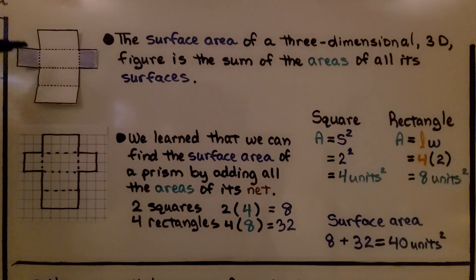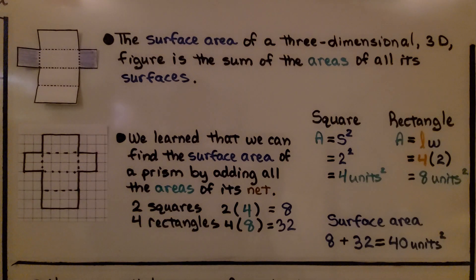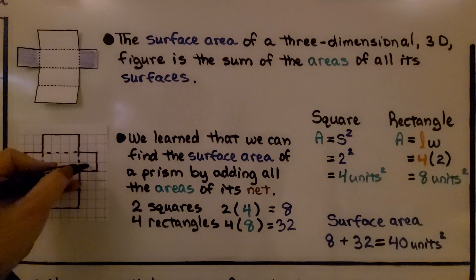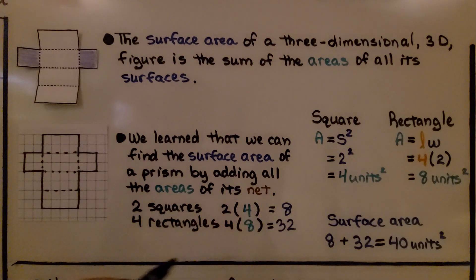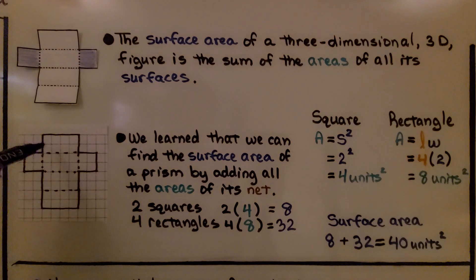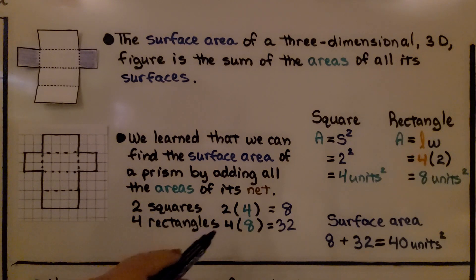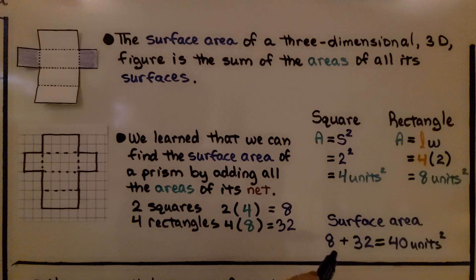Here we have a net of a right rectangular prism. The surface area of a 3D figure is the sum of all the areas of its surfaces. We can find the surface area of a prism by adding all the areas of its net. We have two squares — each is four units — so we have two times four, which is eight for the squares. We have four rectangles, all the same size, with eight units each, so four times eight is thirty-two. The surface area is eight plus thirty-two, which is forty units squared.